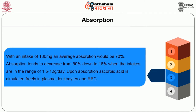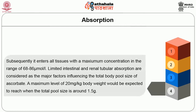With an intake of 180 mg, average absorption would be 70%. Absorption tends to decrease from 50% down to 16% when intakes are in the range of 1.5 to 12 grams per day. Upon absorption, ascorbic acid is circulated freely in plasma, leukocytes and RBCs, and subsequently enters all tissues with a maximum concentration in the range of 68 to 86 micromoles per litre. Limited intestinal and renal tubular absorption are considered as the major factors influencing the total body pool size of ascorbate. A maximum level of 20 mg per kg body weight would be expected when the total pool size is around 1.5 grams.